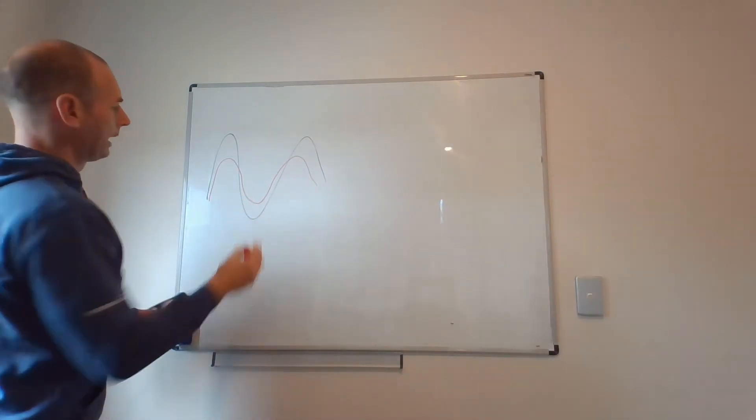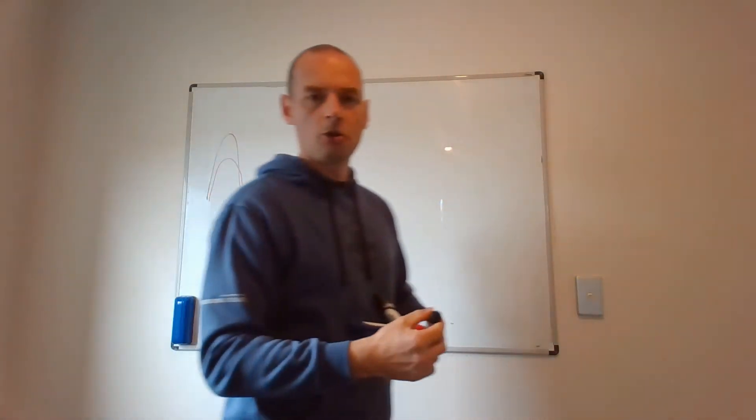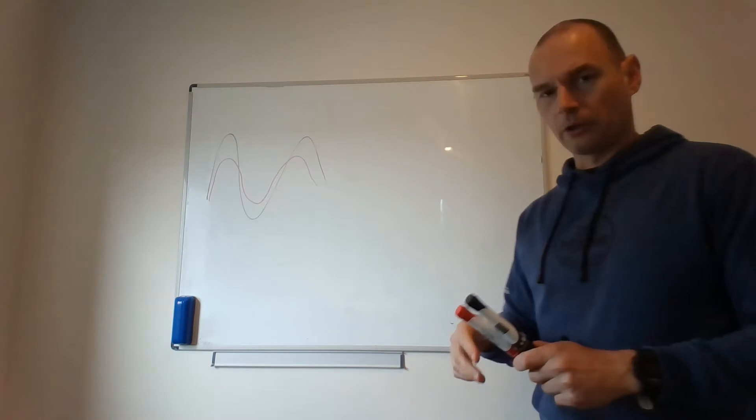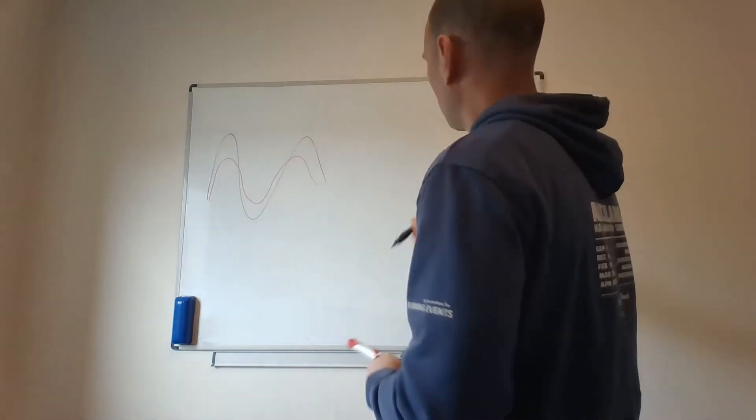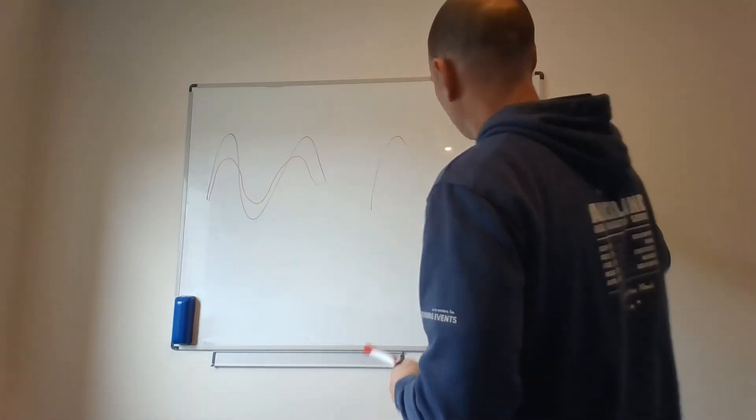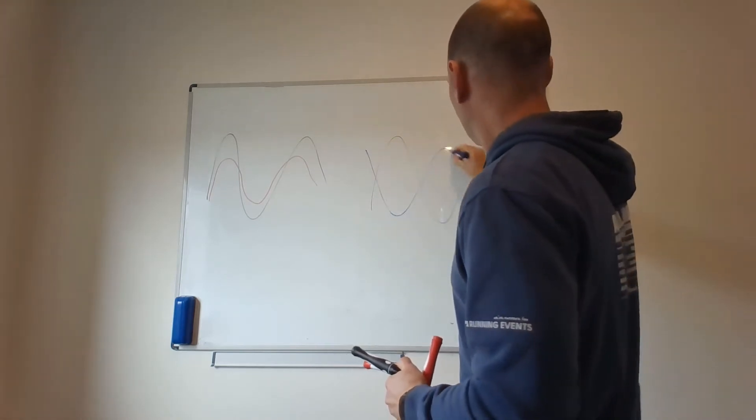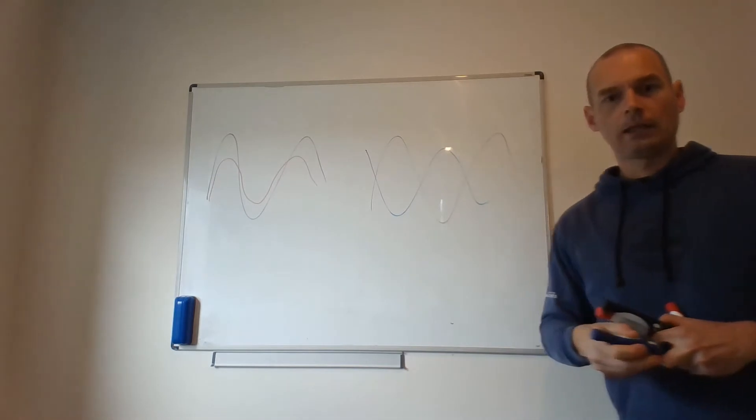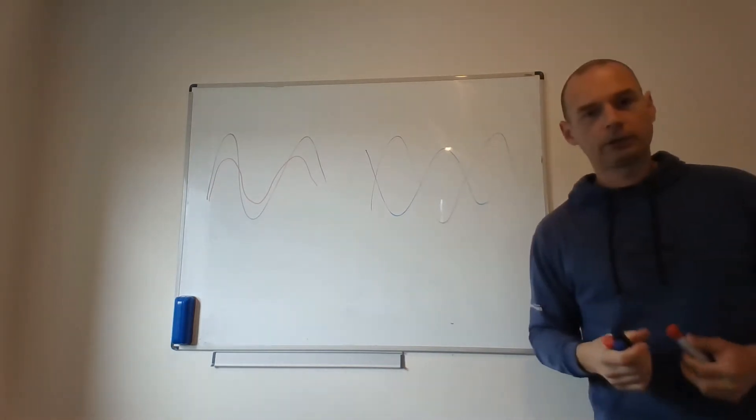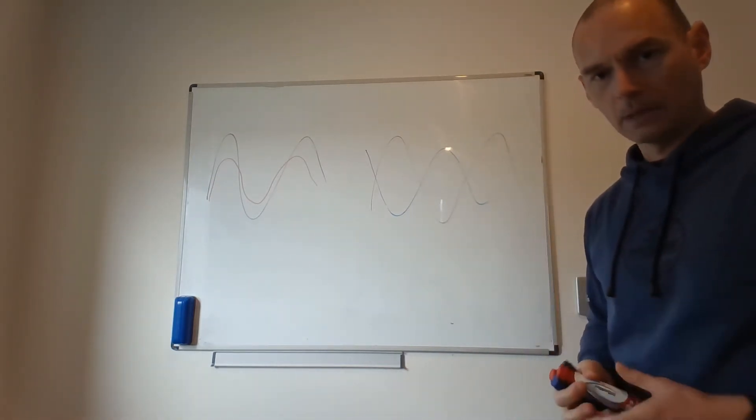So the black line and the red line move very close together. And then you can have another scenario. You have the black line and you have the blue line. And they move more or less in the opposite directions.